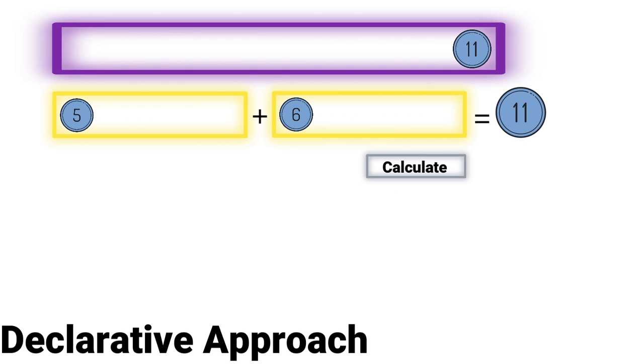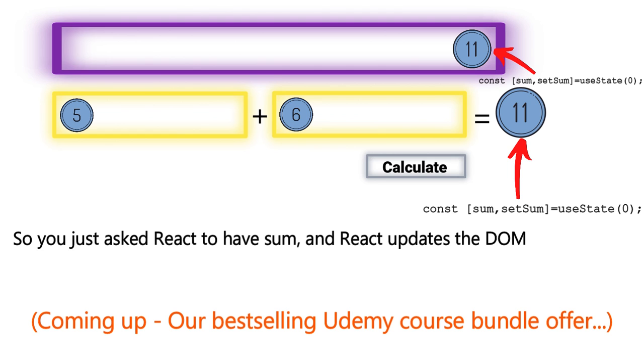Now the same thing, if you try with React, you take a state which is presented here and here. So by changing the state, the sum, it will update automatically everywhere. So you just ask React to have sum and React updates the DOM. This is what a declarative approach is.